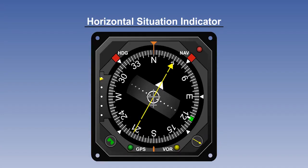A more modern version, which often includes other functions such as the display of VHF OmniRange, usually shortened to VOR, is known as the Horizontal Situation Indicator, or HSI.